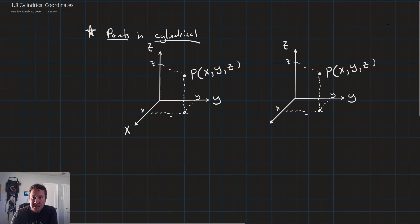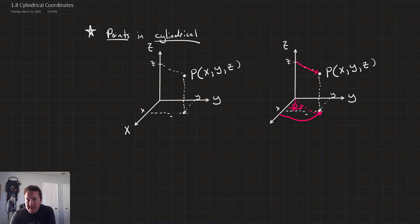Cylindrical coordinates use an angle theta — if we imagine a circle coming out from the x-axis and some line, that angle is called theta. We'll also have the distance from the z-axis to the point, the radius of that circle, which we represent with the Greek symbol rho.